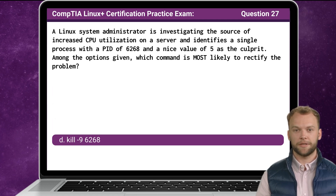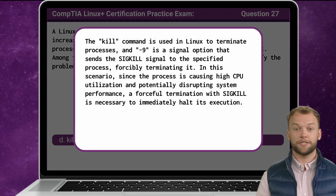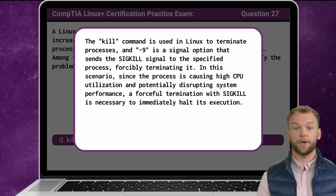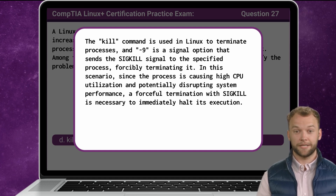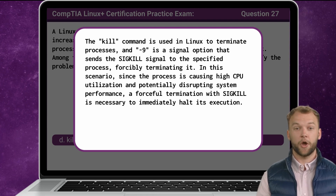The answer is D: kill -9 6268. The kill command is used in Linux to terminate processes, and -9 is a signal option that sends the SIGKILL signal to the specified process, forcibly terminating it. In this scenario, since the process is causing high CPU utilization and potentially disrupting system performance, a forceful termination with SIGKILL is necessary to immediately halt its execution.